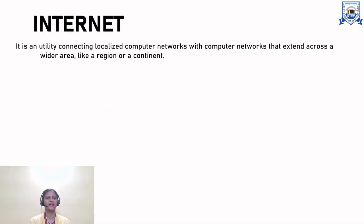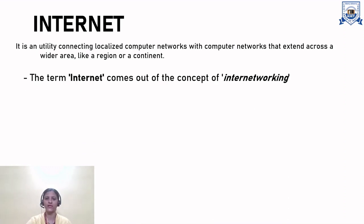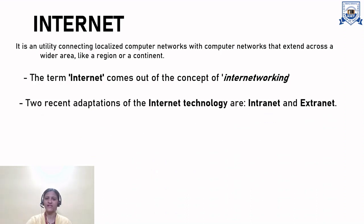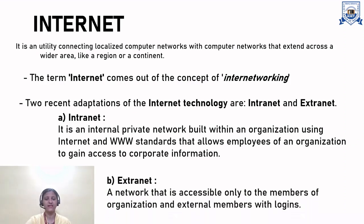What is the Internet? It is a utility connecting localized computer networks with computer networks that extend across a wide area like a region or a continent. The term Internet comes out of the concept of internetworking. Two recent adaptations of Internet technologies are Intranet and Extranet. Intranet basically belongs to an internal private network built within an organization using Internet and WWW standards, allowing employees to gain access to corporate information. It is accessible only to members of an organization and external members with logins.